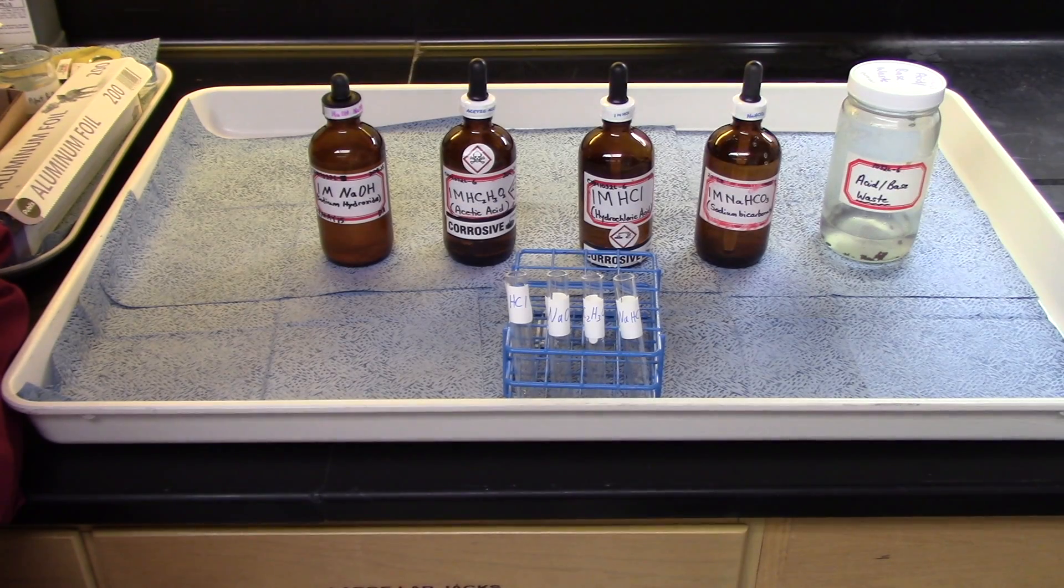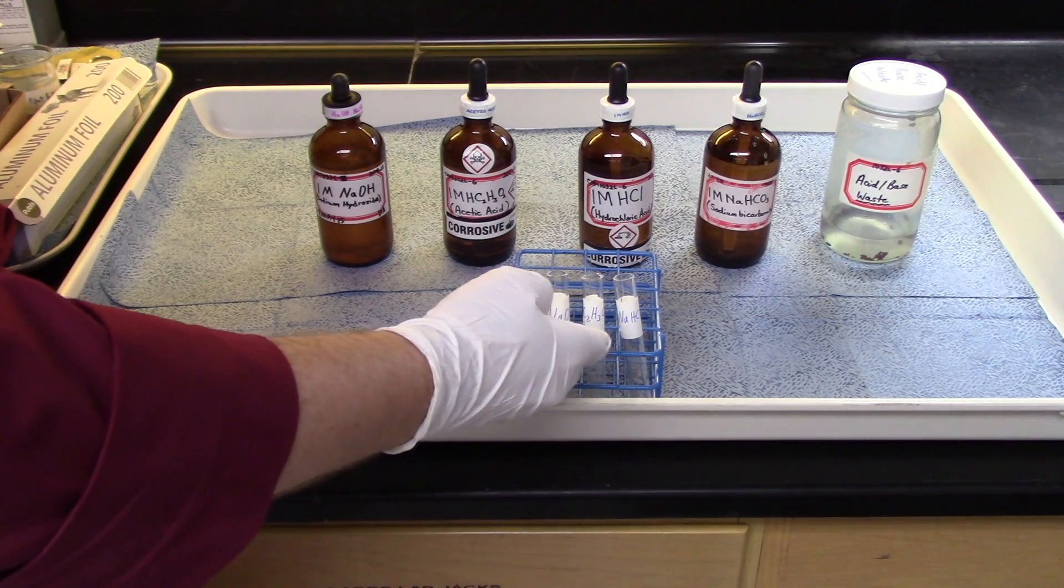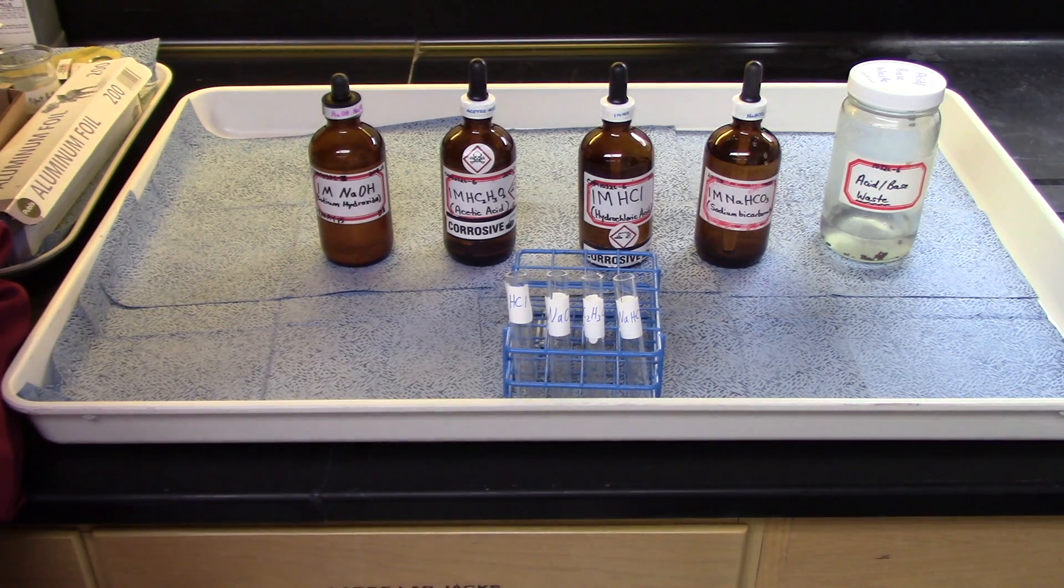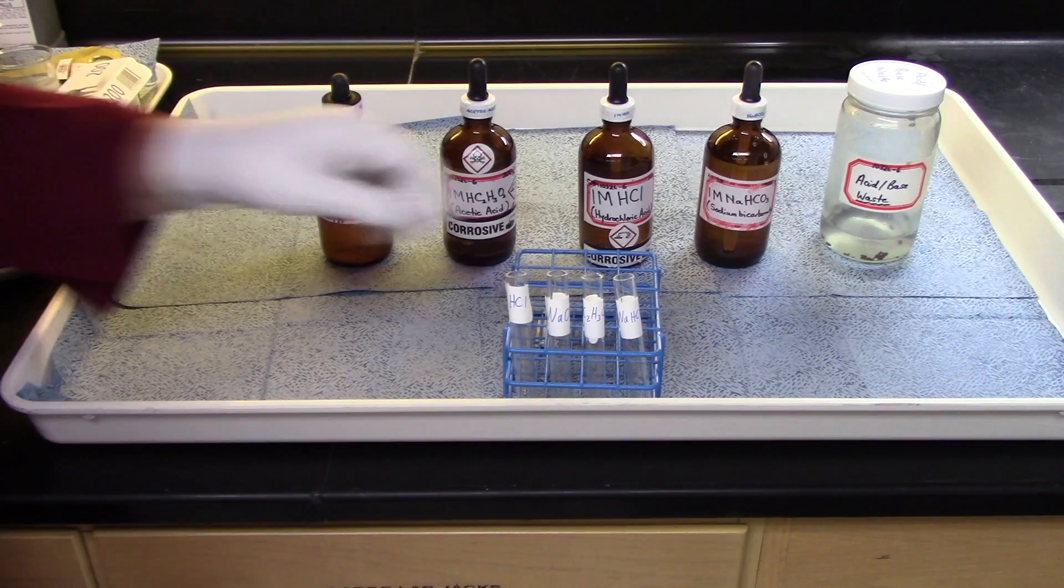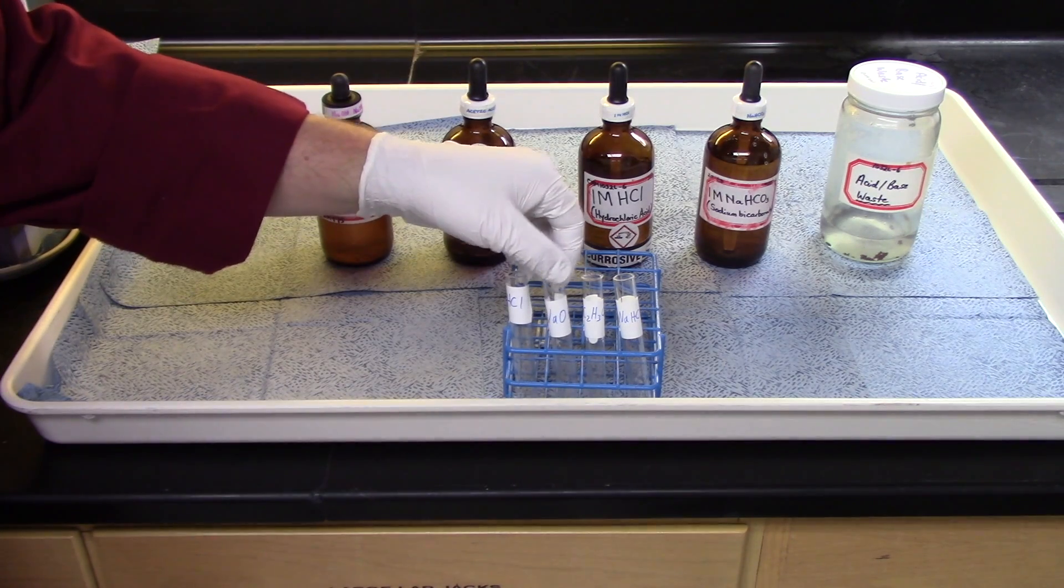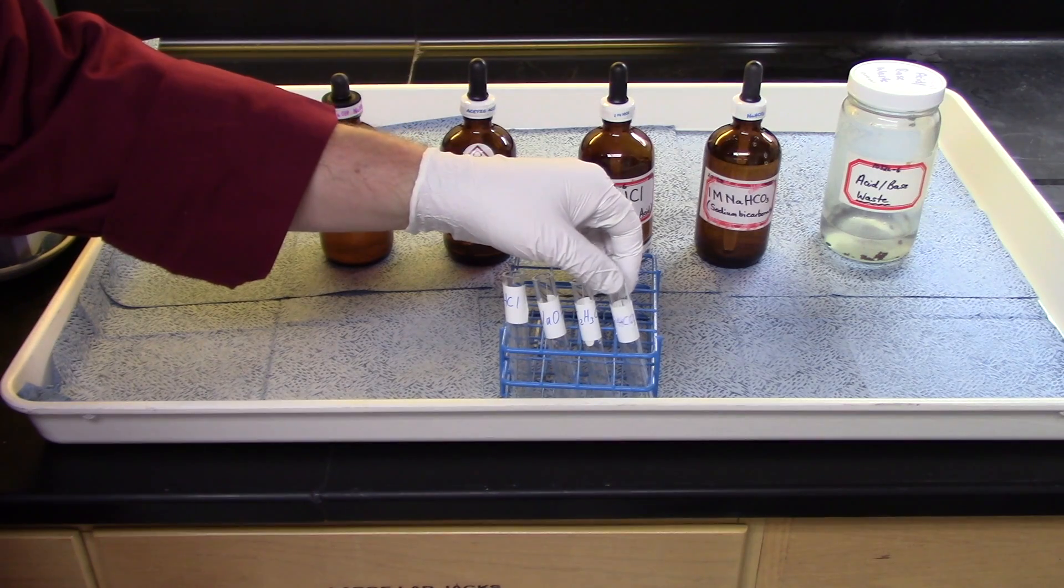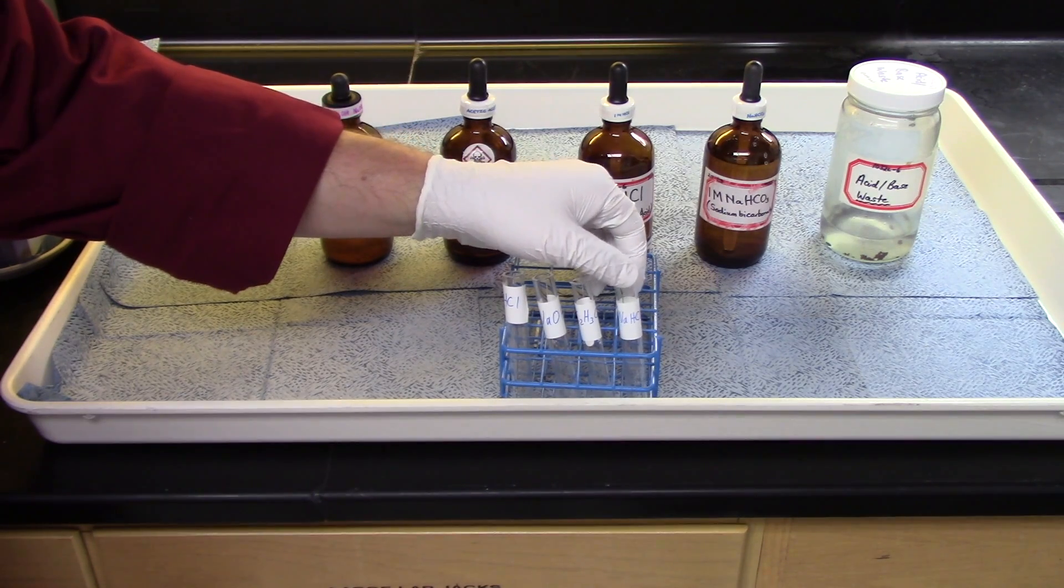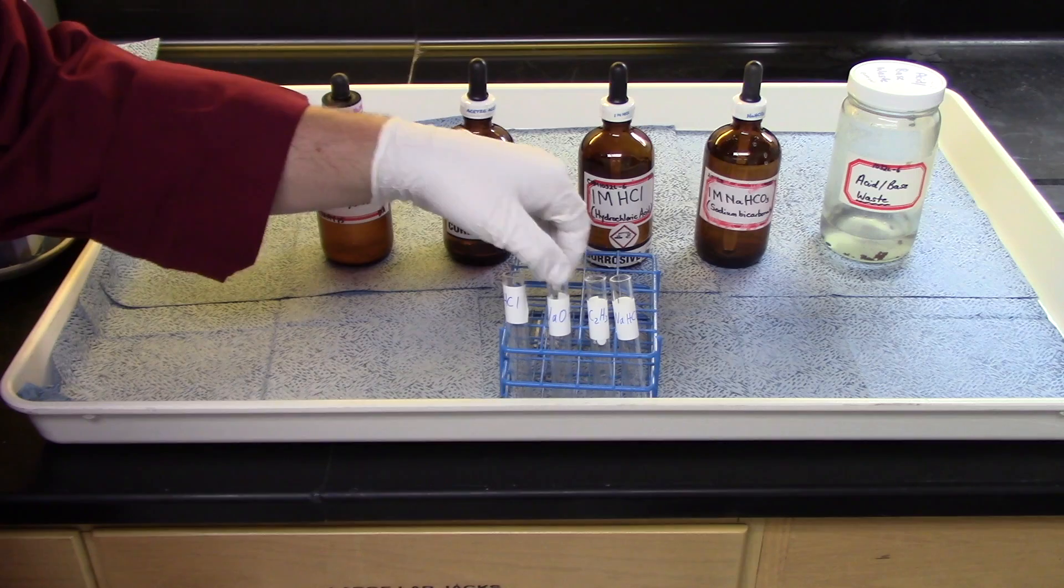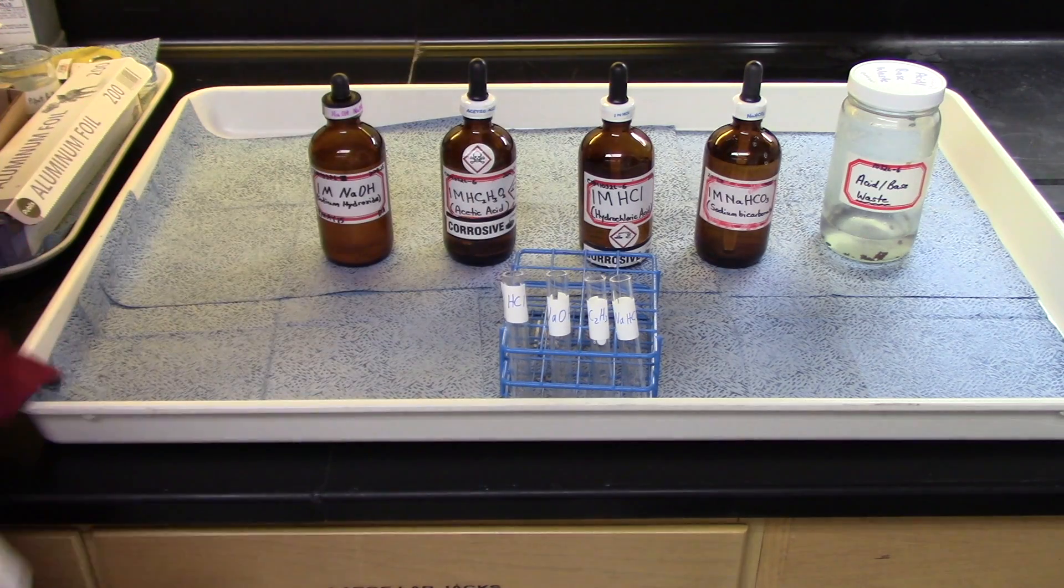This is part three of today's experiment. Again, I have labeled four different test tubes for four different reagents. HCl, NaOH, HC2H3O2, and NaHCO3. Make sure that the correct reagent goes into the properly labeled test tube.